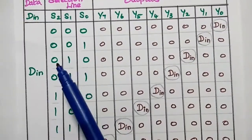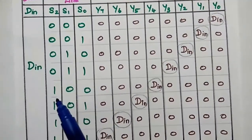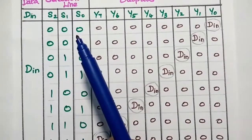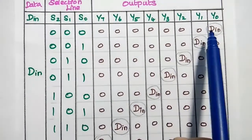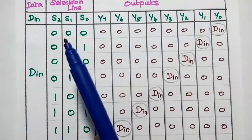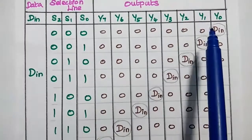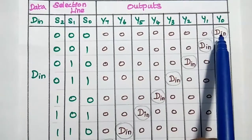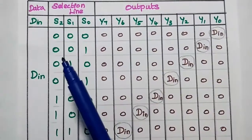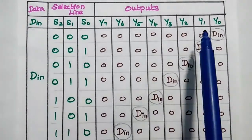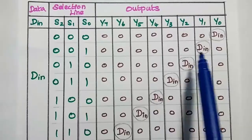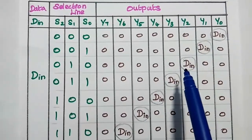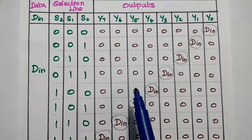The 8 combinations of the 3 selection lines are: 000, 001, 010, 011, 100, 101, 110, 111. For each combination, we can have a specific output path selected, directing the input data to the corresponding output line.